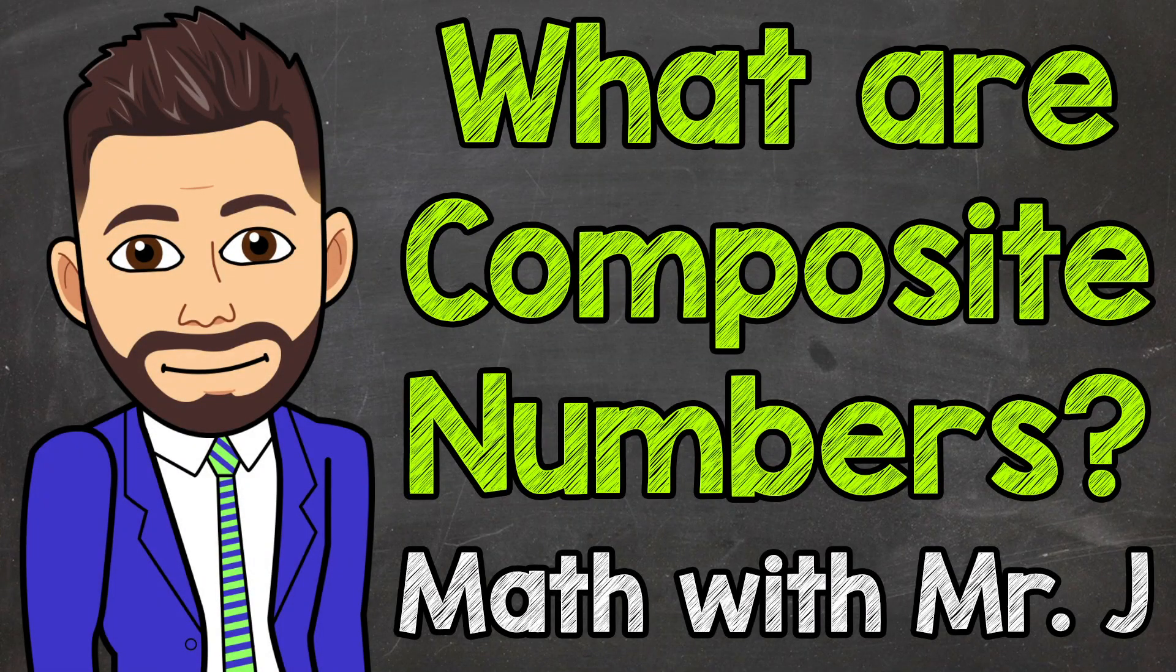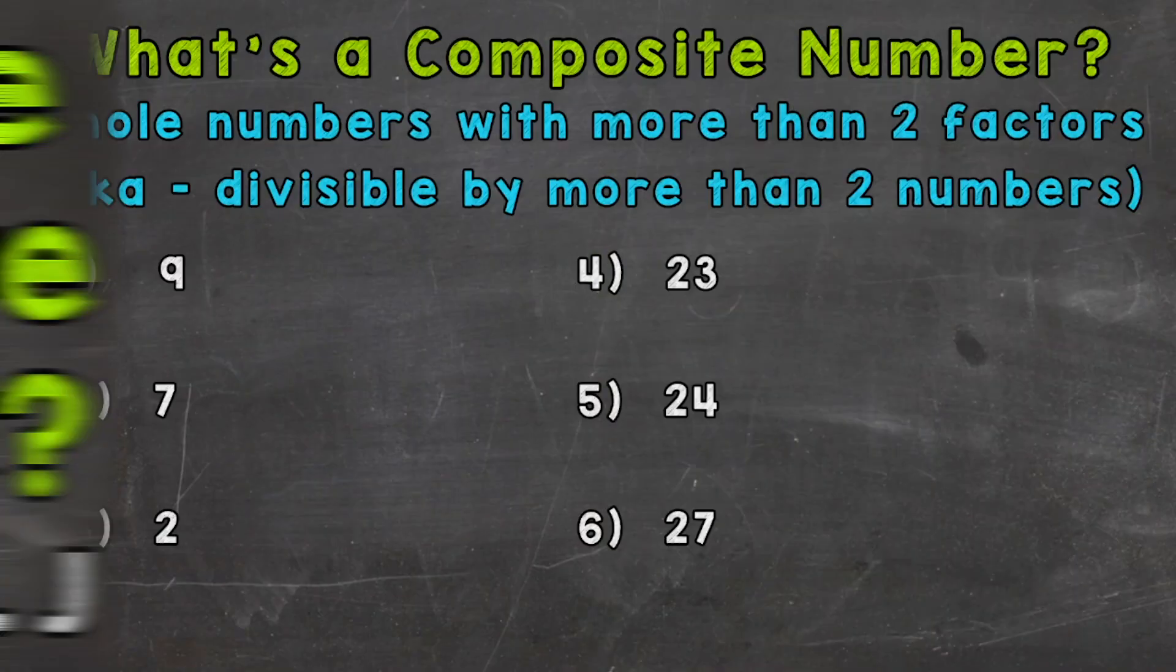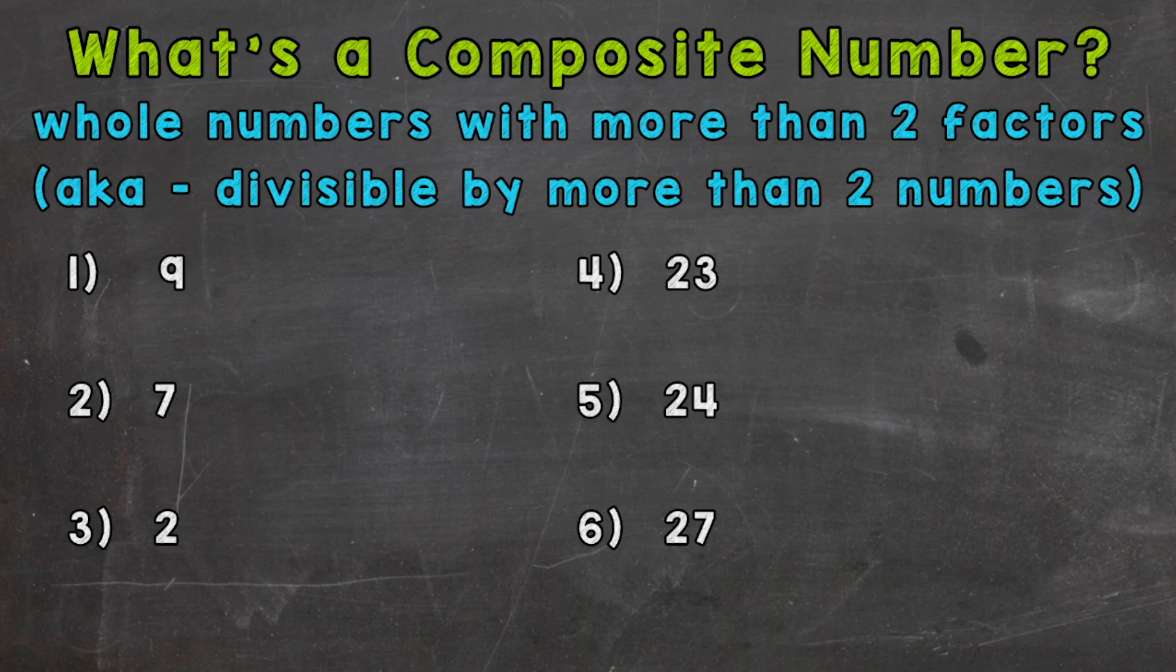Welcome to Math with Mr. J. In this video, I'm going to cover what composite numbers are. Composite numbers are whole numbers with more than two factors. Another way of thinking about it, composite numbers are divisible by more than two numbers.